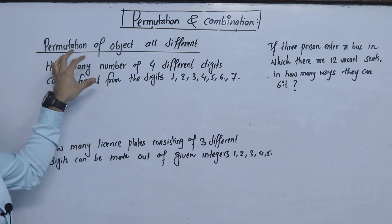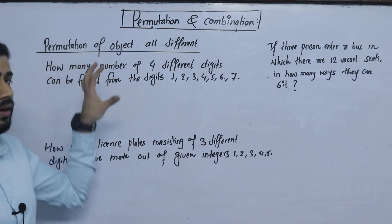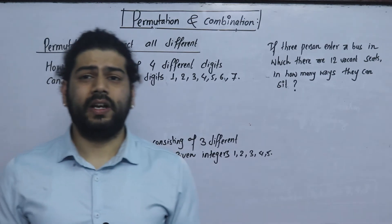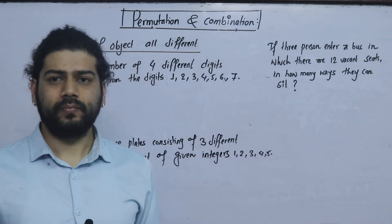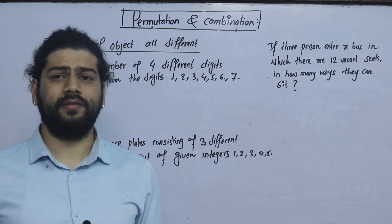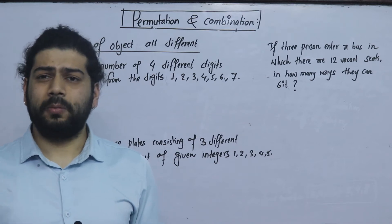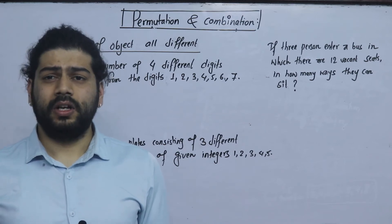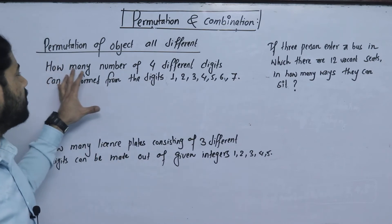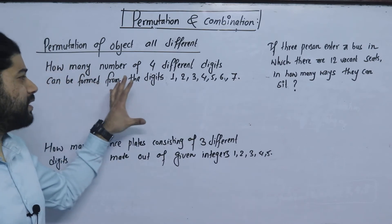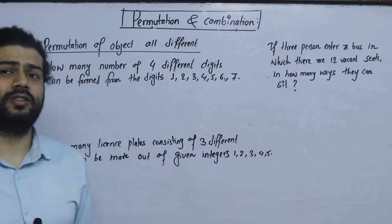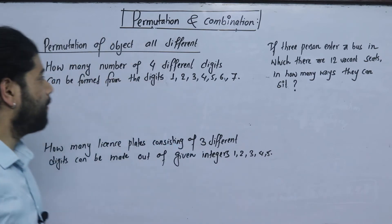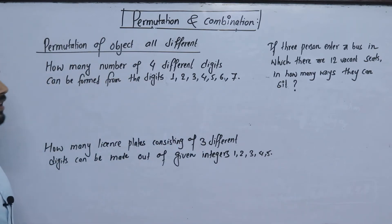Related to what the permutation of objects means when all are different. If it is all different, the permutation of objects is all different. Permutation of objects not all different. Business mathematics — what is the permutation?